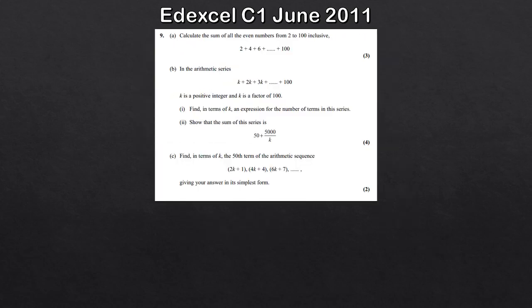Let's take a look at the next question. Part A asks us to find the sum of all the even numbers from 2 to 100 inclusive. So we want the sum of 2 plus 4 plus 6 plus 8, all the way up to 100.